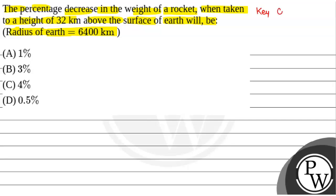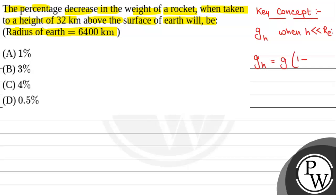First of all, we will see what the key concept is used to solve this question. The key concept is the acceleration due to gravity at a height h, when h is much much less than the radius of the Earth, given by: g_h = g × (1 - 2h/R). This is the acceleration due to gravity at height h when h is much much less than the radius of the Earth.